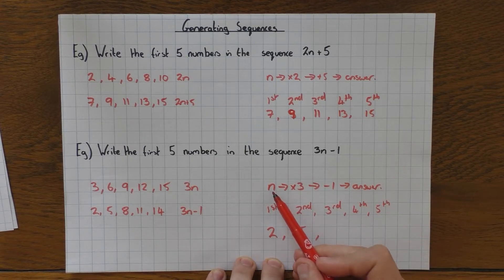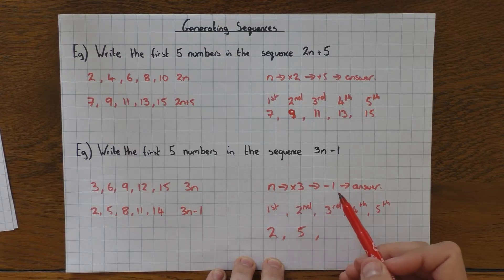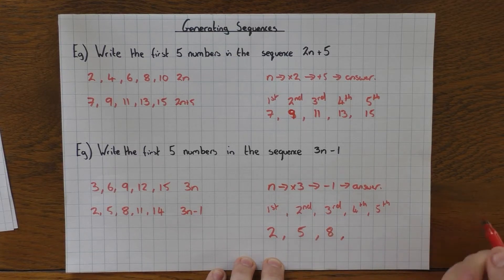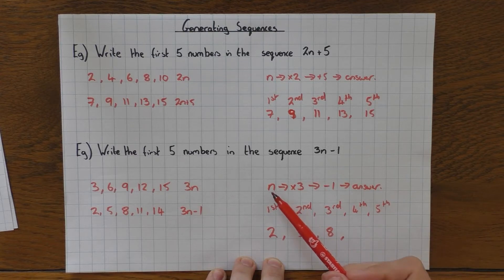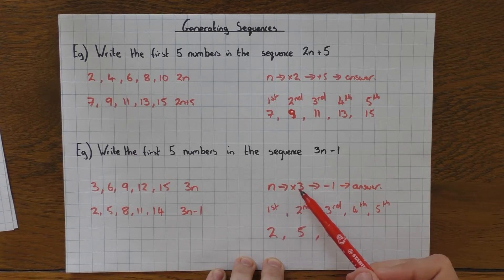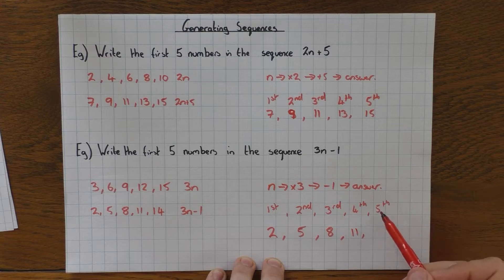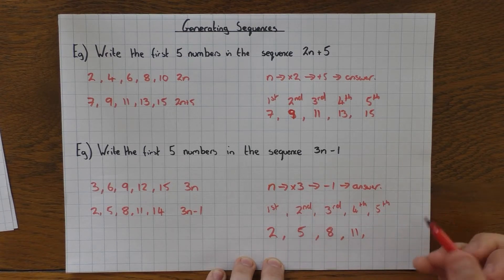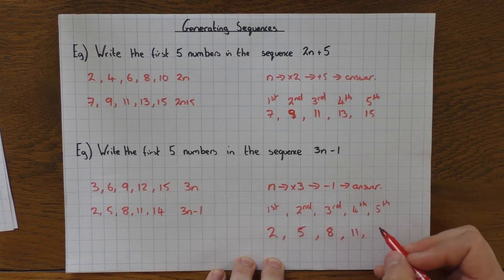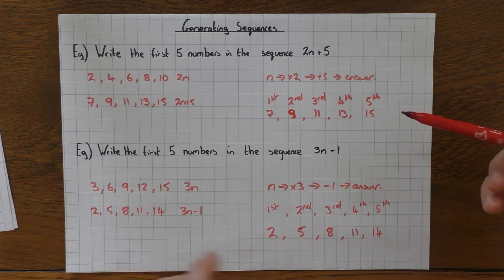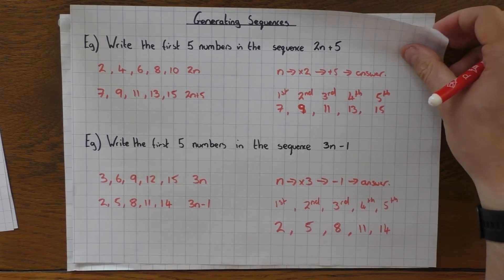Third number in the sequence, n would be 3, 3 times 3 is 9, take away 1 is 8. Fourth number in the sequence, n would be 4, 4 times 3 is 12, take away 1 is 11. And the last one, the fifth number in the sequence, n would be 5, 5 times 3 is 15, take away 1 is 14. So there you go, exactly the same but slightly different ways of doing it.